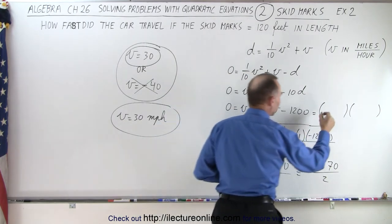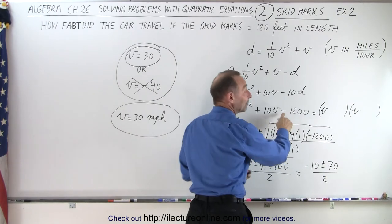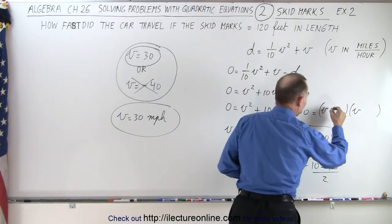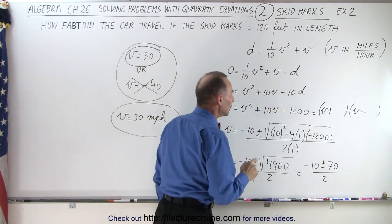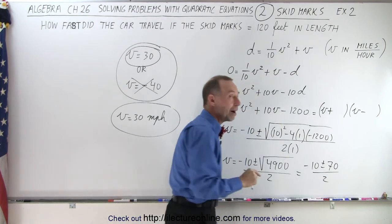And of course for the first term we get v and v. Then for the last term we have a negative there. That means we have a positive and negative because when you multiply plus and a negative you get a negative. And now we need two numbers. When you multiply you get 1200 and when you add you get a positive 10.